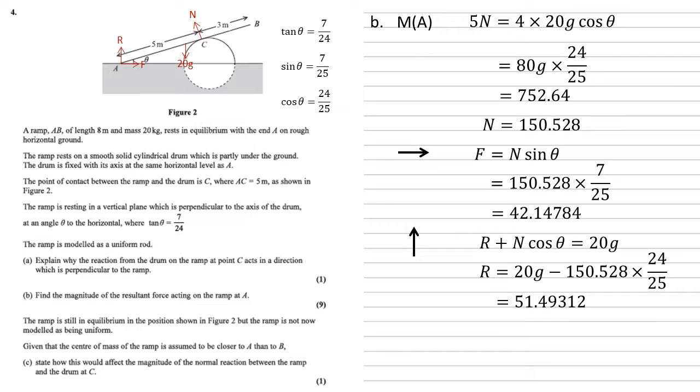Now we've got R and F to find the resultant. We do the square root of the sum of the squares of R and F, which gives us a resultant force of 66.5.